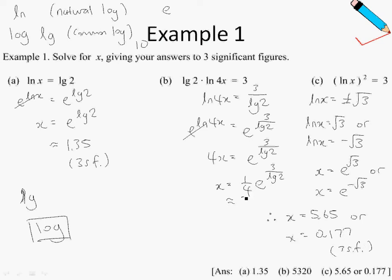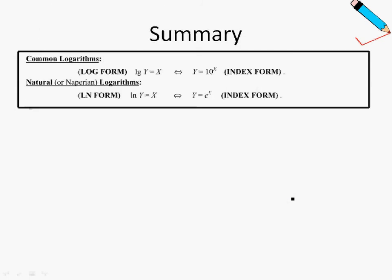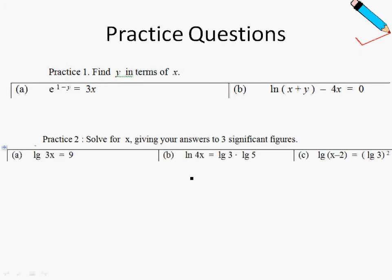To summarize: common logarithm refers to log to the base of 10, and natural logarithm refers to log to the base of e. In the first case we often use 'lg', and in the second case we often use 'ln'. There are some practice questions — you can pause the video to take them down. Thank you for watching. For more videos, go to pencilcollege.com.